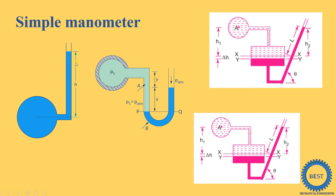In a simple manometer, we see this is the glass tube and this glass tube is connected — the glass tube has two ends. The first end is connected to the point where the pressure is to be measured, this is the U-tube manometer. One end is connected to the point where the pressure is to be measured and the second end is open to the atmosphere.